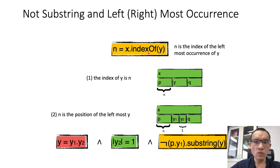To express indexOf, we need the following two constraints. First, we say that X can be divided into three parts, P, Y, Q, and the length of P is N. Then we ensure that N is the position of the left-most Y. In other words, the string P, Y1, which is obtained by removing the last character Y2 from the string P, Y, does not contain the substring Y.